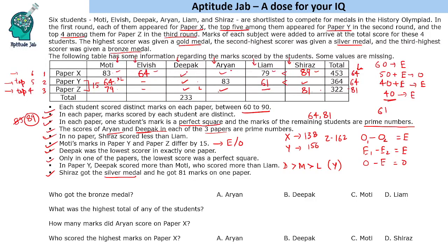For paper Z, the total of the two missing values is 162 and the lowest must be less than 79. The prime number less than 79 that works is 73, giving 73 plus 89 equals 162. Trying 71 gives 91 which is not valid, and 67 gives 95 which exceeds 90. So the only possibility is 73 and 89 — Deepak scores 73 and Aryan scores 89 in paper Z.